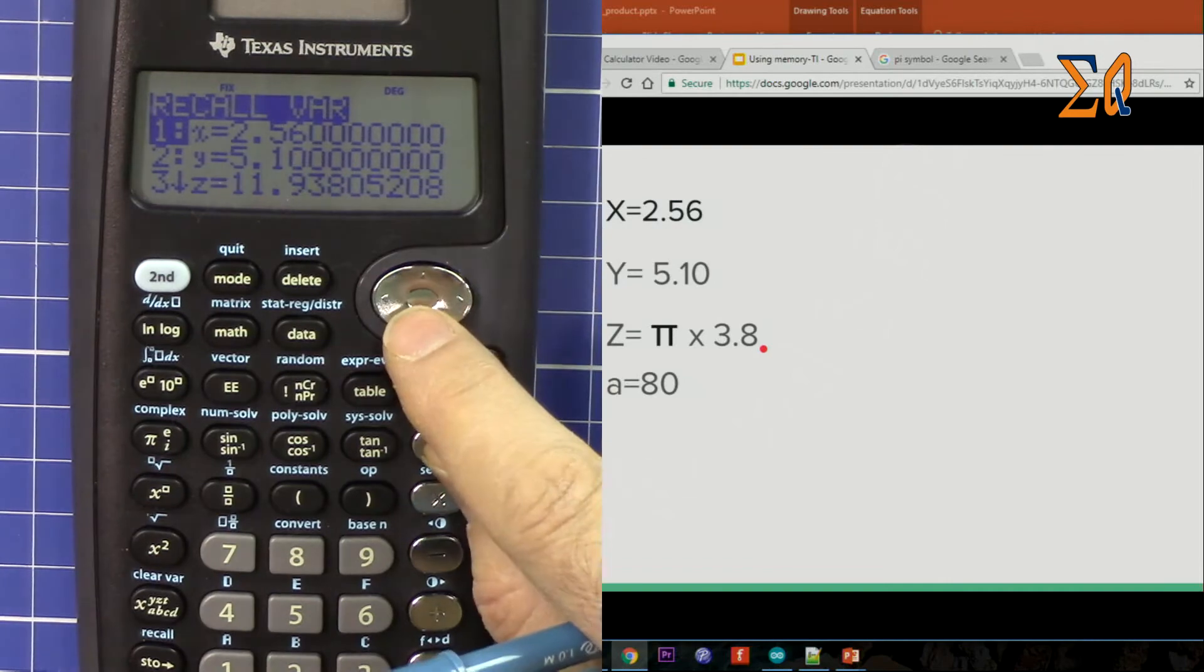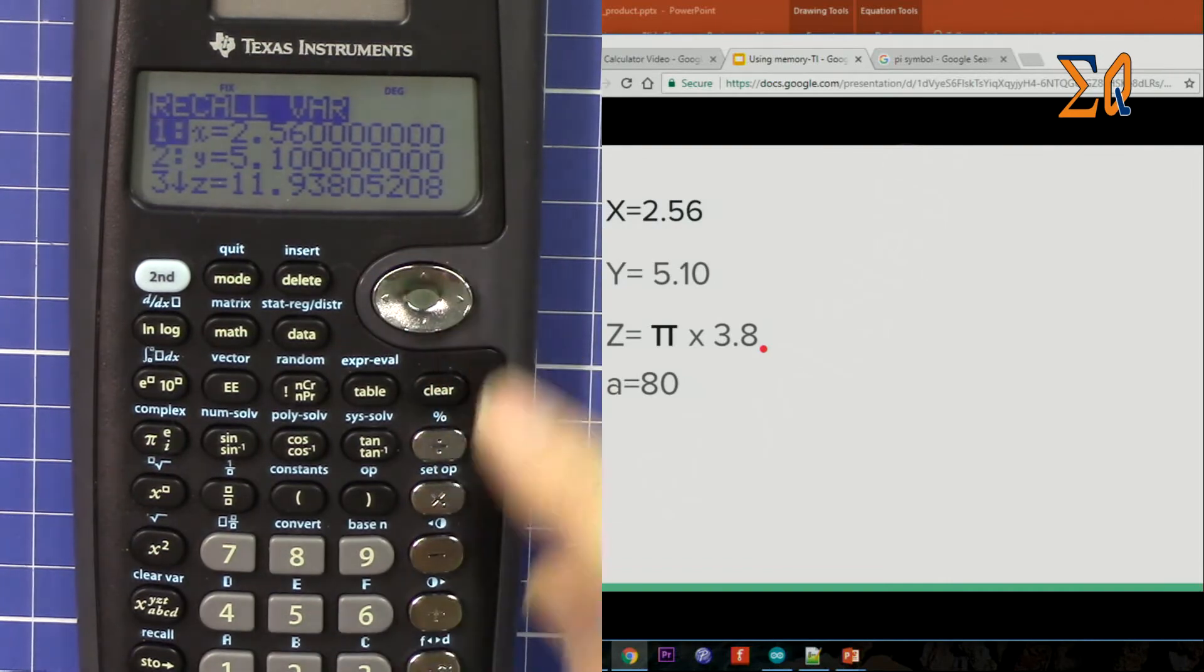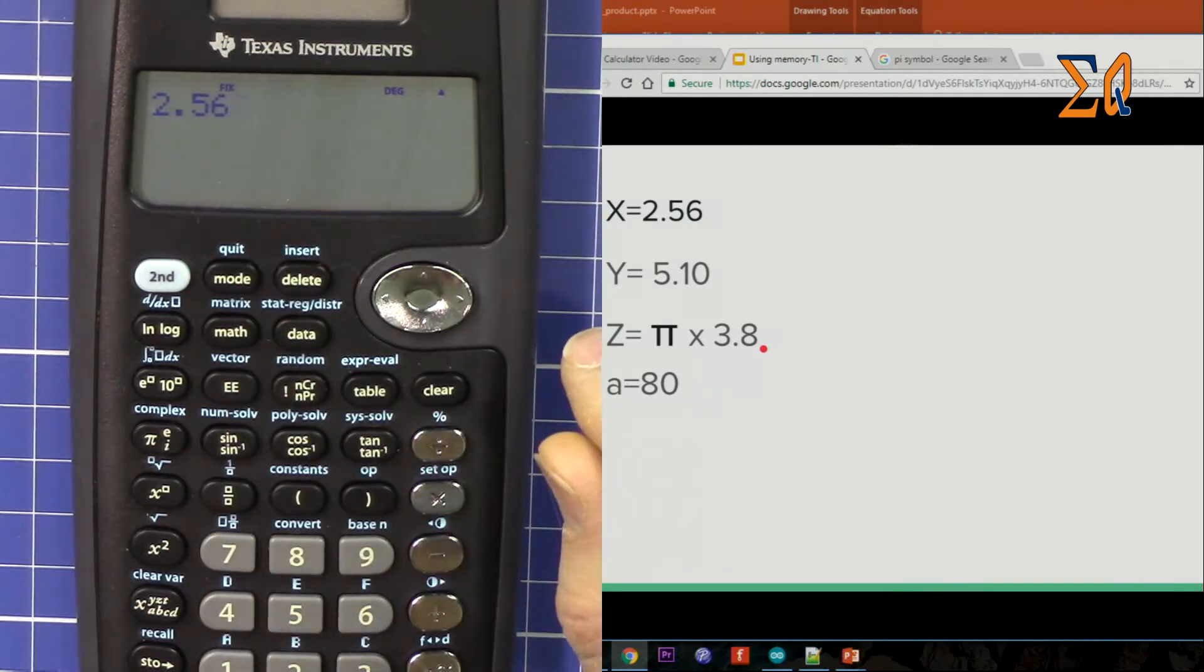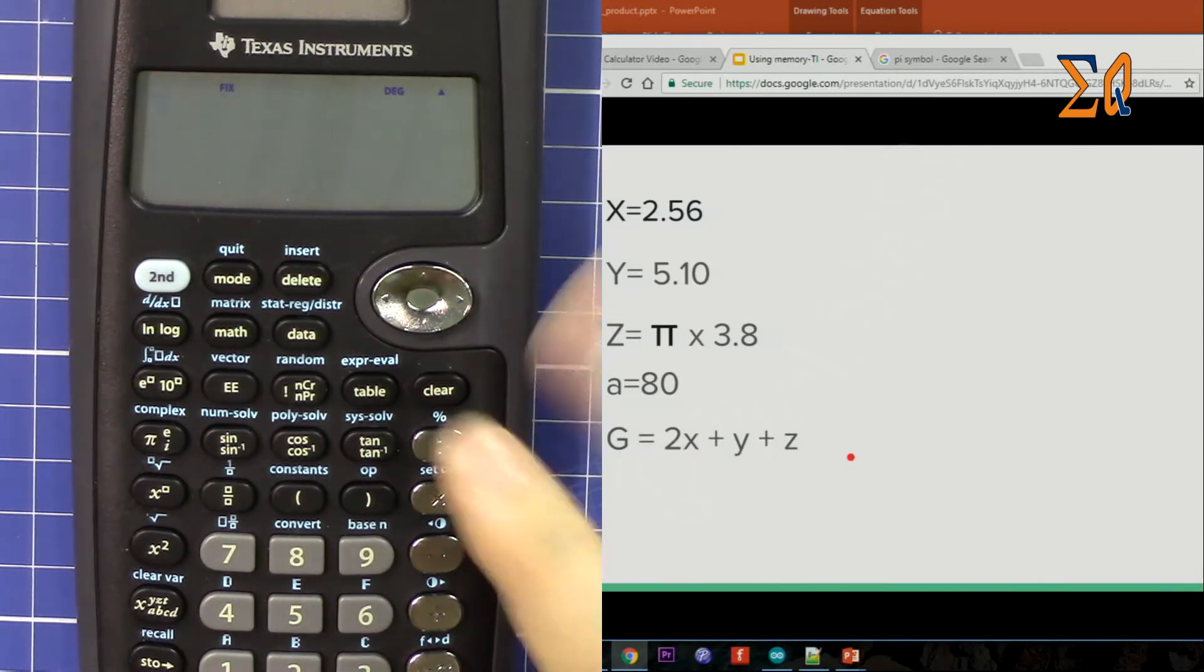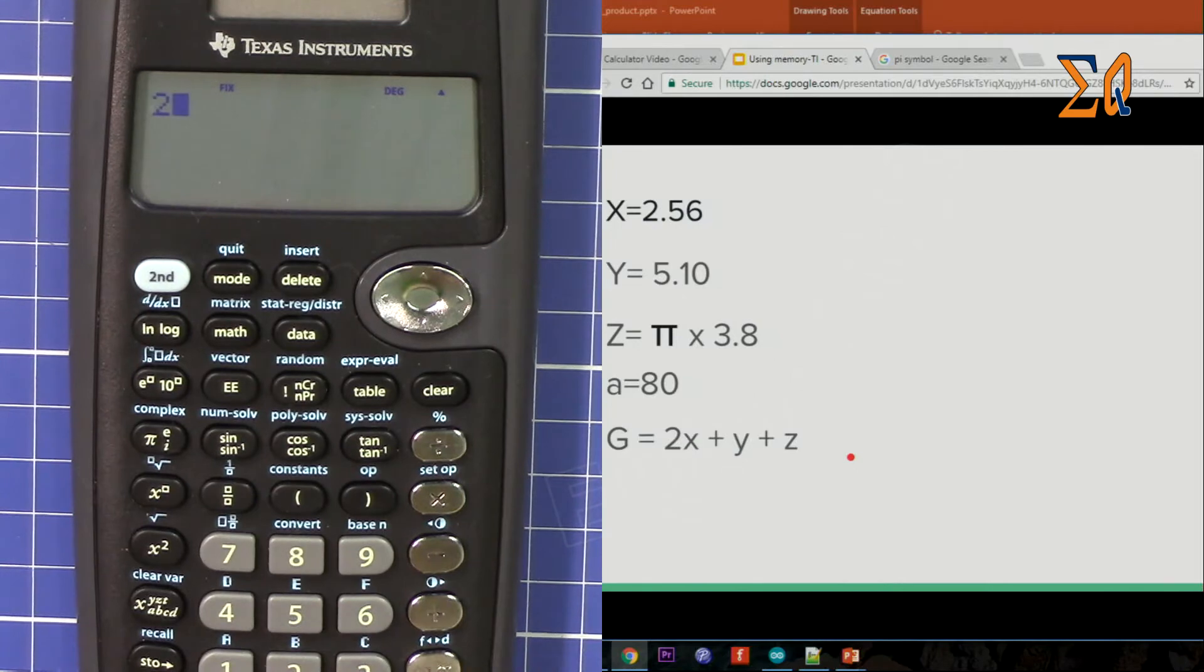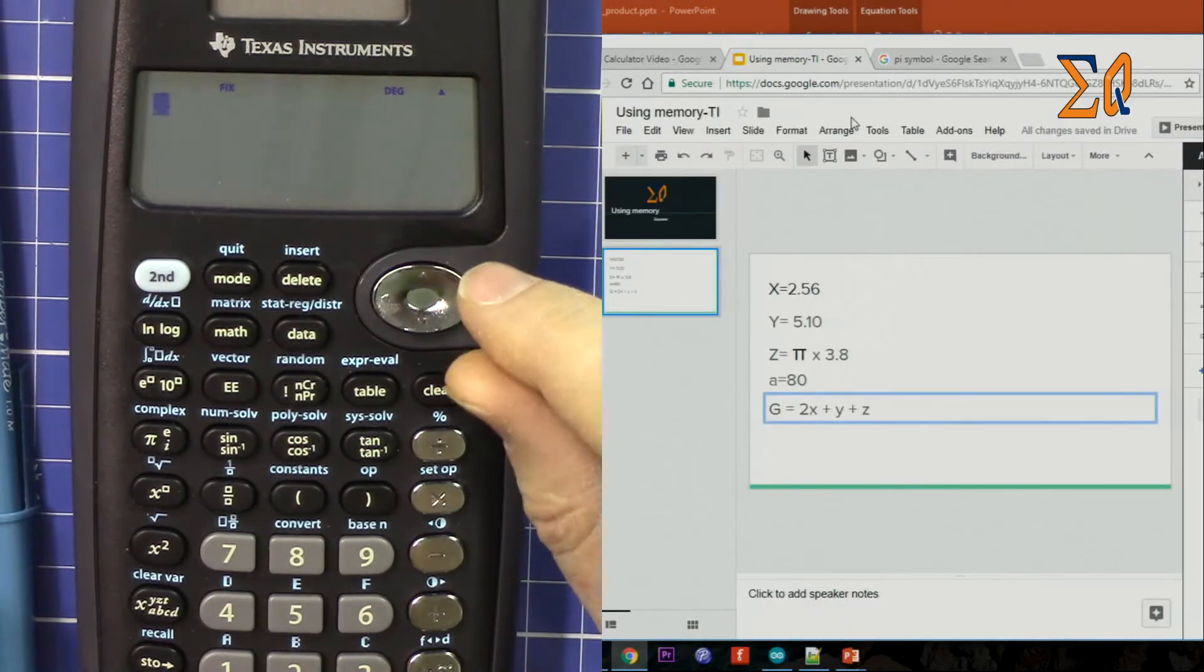And you press it whatever comes, but you can see the value. Sometimes you don't know the variable number name but you know the value. From the value you might recognize it, so just one, so press it this way the value will come. Now let's say you want to do the calculation G. Let's say G equals 2X plus Y plus Z. So clear. So 2.